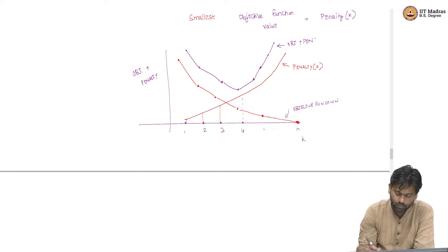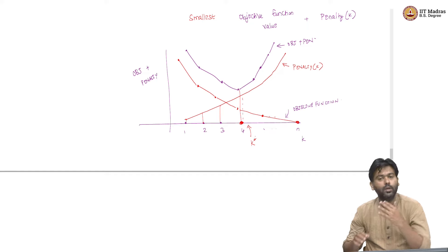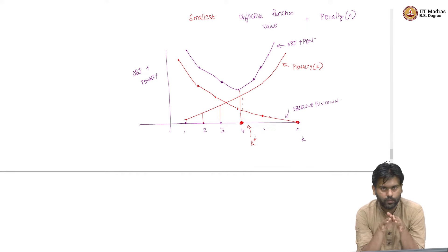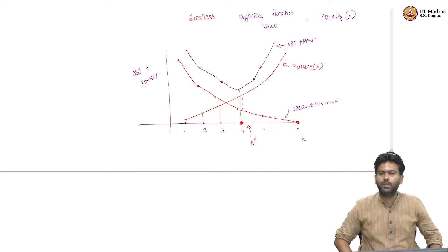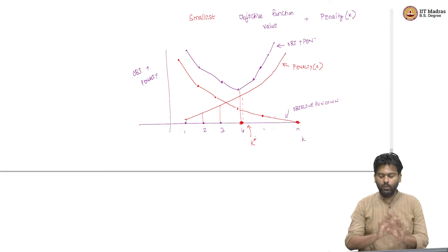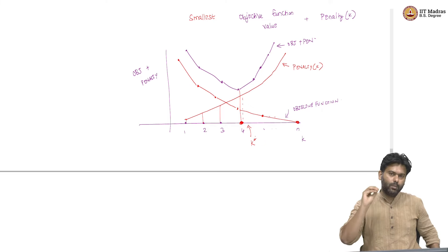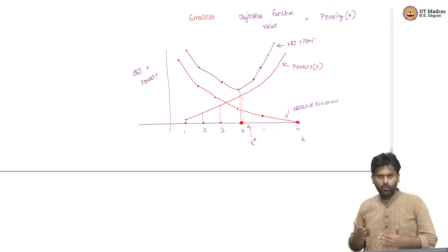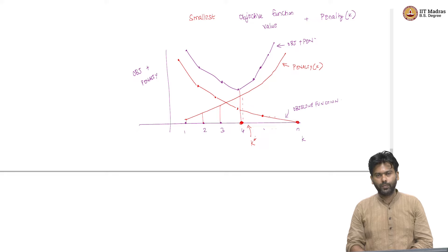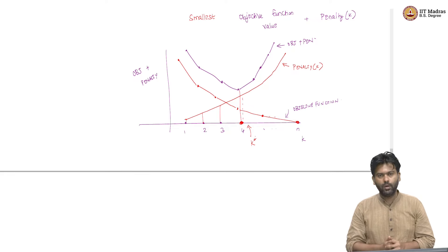Which means there will be some choice of K* where the sum of the objective and the penalty will be as small as possible, and that K* will be my choice of K. Basically, this means I have to run it for different choices of K. For each choice of K, you can try out different initializations — K-means++ or uniform initialization, run it multiple times — and then the best partition obtained for that K gives the objective function value we use. You run it for different choices of K and at some point, you find a K where objective plus penalty is minimized — and that is your K*.